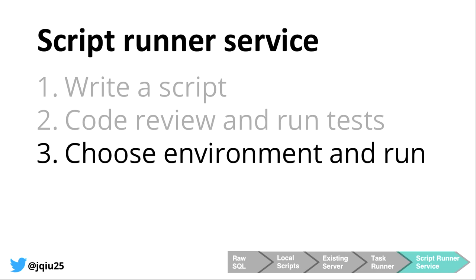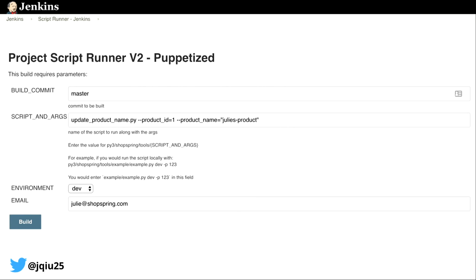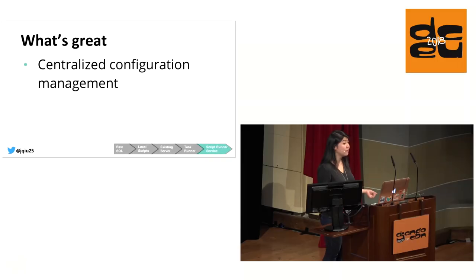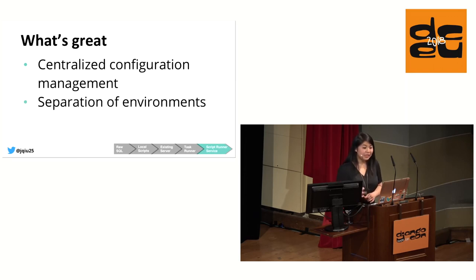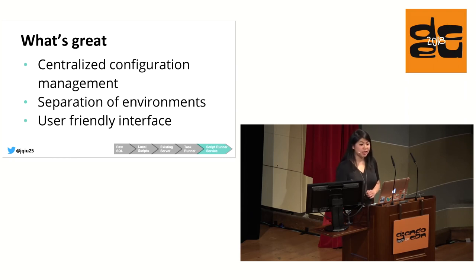All they needed to do was select the environment they wanted to run the script in. To use the UI, the user goes to the user interface, types in the file path of the script they want to run, selects the environment, and clicks build. All the command line arguments we had to manually input before are now available just as environment variables on the server. The key benefits of the script runner service include: centralized configuration management — a much more organized system for using credentials in scripts — a clear separation of environment, and it's the most user-friendly strategy of all those we've seen.